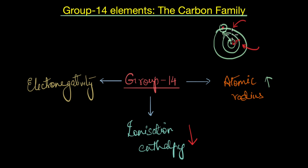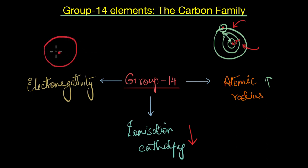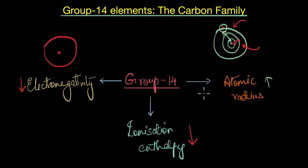Ionization energy in general decreases down the group because as electrons move farther away it becomes easier to knock them off from nuclear attraction. This extends to electronegativity as well — the tendency to attract a shared pair of electrons. As atomic size increases, it becomes difficult for the nucleus to attract any shared pair of electrons, so electronegativity also decreases down the group in general.